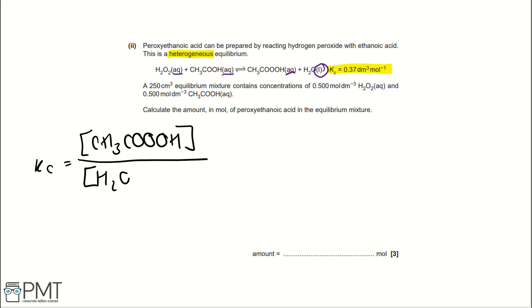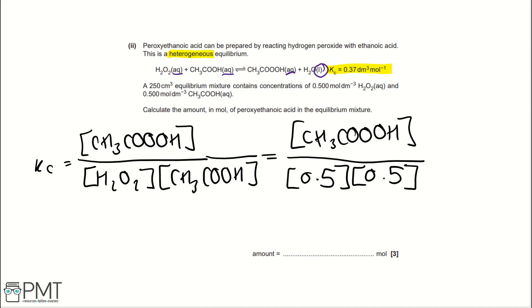When writing an expression for Kc, because we're given Kc here, we use the same states. So, our expression for Kc would be that peroxyethanoic acid, because we work backwards when writing an expression for Kc, over hydrogen peroxide multiplied by ethanoic acid. If we plug in values for this, the square brackets in Kc, they mean concentration, and we've got values for concentration. So, rewriting Kc, we have peroxyethanoic acid over 0.5 and 0.5 again, because they're the values we've been given as the concentration of hydrogen peroxide and ethanoic acid. We also know that this equals 0.37. So, if we rearrange this to get the concentration of peroxyethanoic acid, we would write 0.37 multiplied by 0.5 squared, and that gives us 0.0925 moles per decimetre cubed.